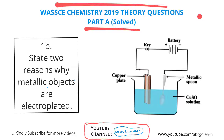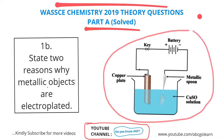Question number one B states: give two reasons why metallic objects are electroplated. To talk about the reasons, we must first know what electroplating means. Electroplating means coating something with a thin layer of metal by using electrolysis. The picture on the screen right now gives a clear expression of that — you can see this is an electrolytic cell, and the process works through electrolysis.